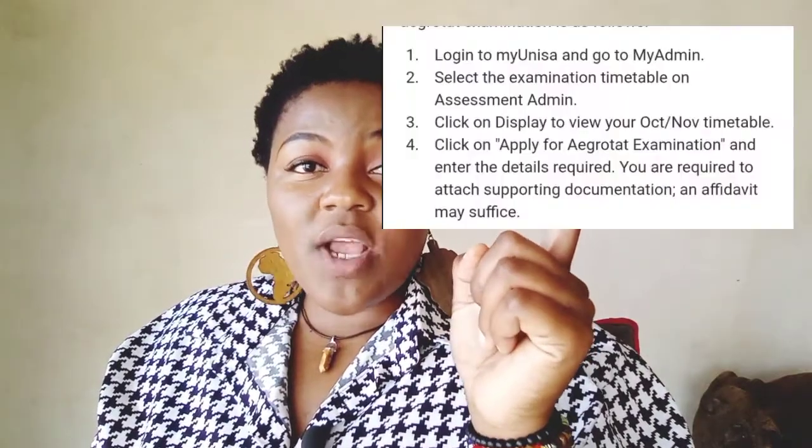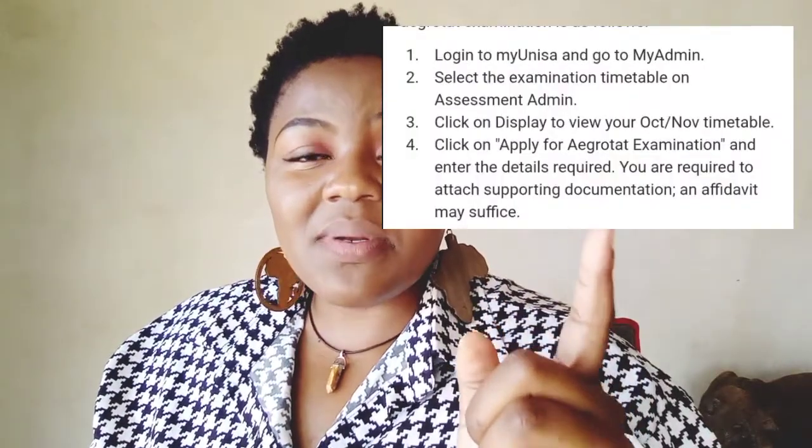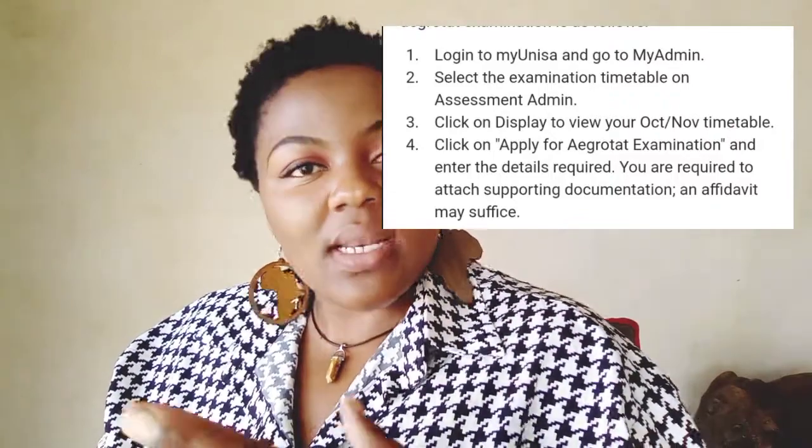If — God forbid — that happens and you are a first year student experiencing that situation, they will be able to give you a second chance to write your examination. If you are not a first year student, you will need to apply for an aegrotat. An aegrotat is like a second chance — when you had difficulties you can state them. There is a form you need to fill in, following the required steps, then you submit so that you'll be given the chance to write your examination again and not repeat the whole module.